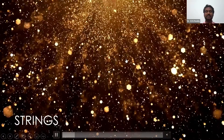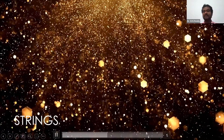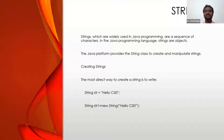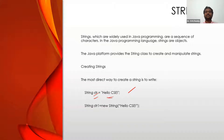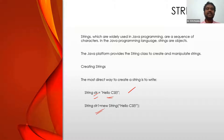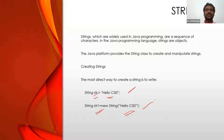So without further delay, let's see some sample code. A string can be created simply like this: String str = "Hello CSE" — this is your actual string. Another way is to create it like an object: String str1 = new String("Hello CSE"). Both approaches do the same thing — the string 'Hello CSE' is created.